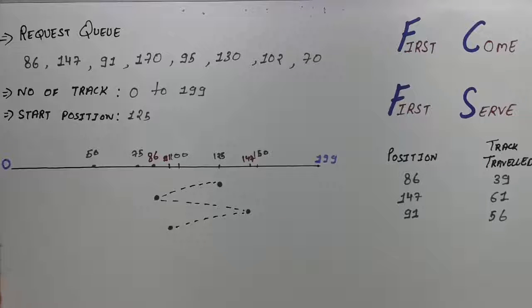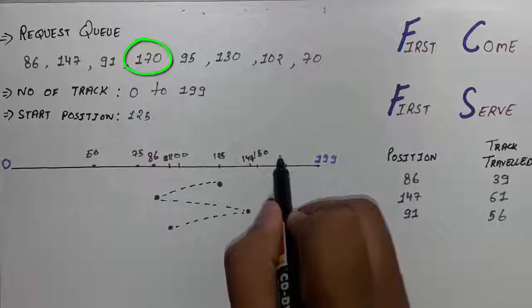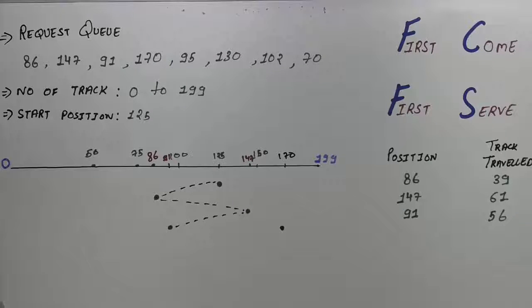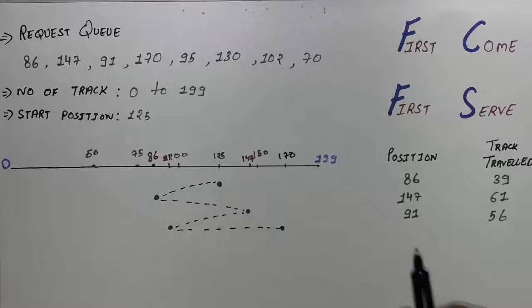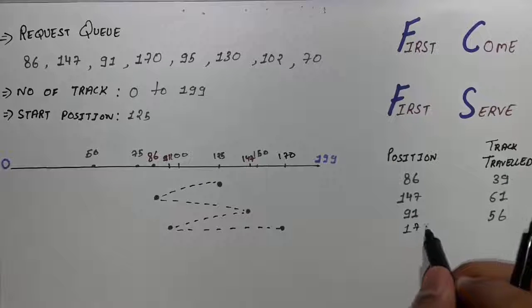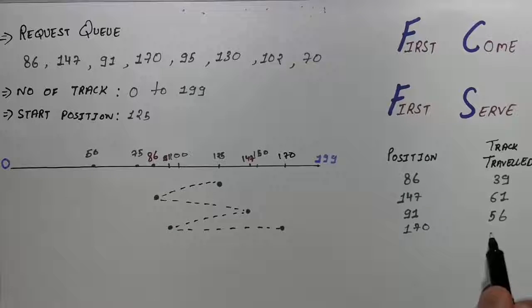Then the next position we have to look is 170. So the 170 should be somewhere here. So write 170 and then the header will move here. So now because we move to the 170 we have to write the 170 here. So write 170 and now the difference between 91 and 170 will be 79.